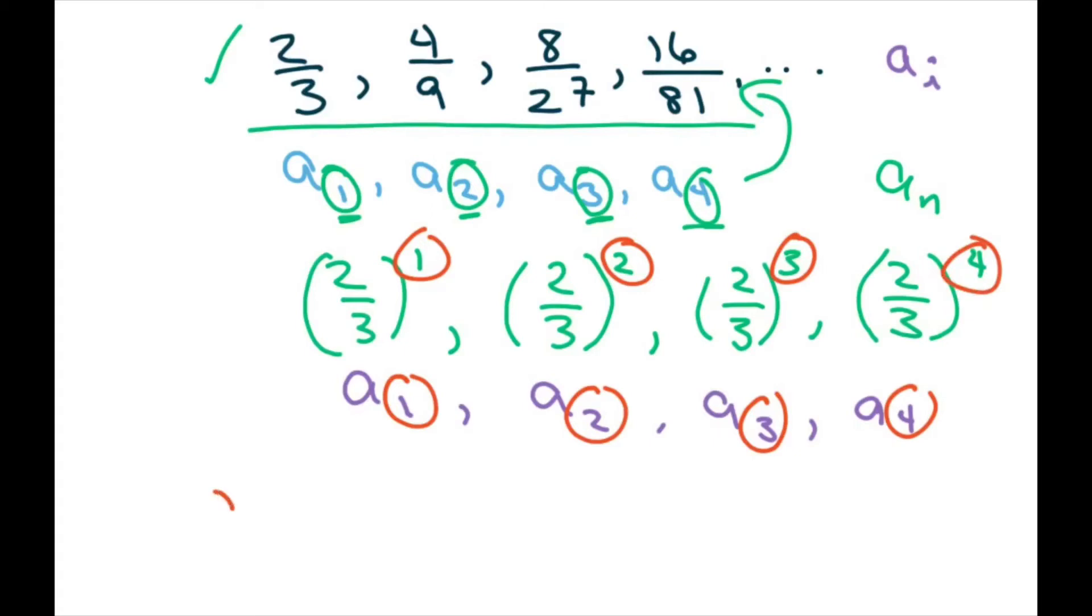So now I can just write this as a sub n equals two thirds to the nth power, since they match exactly and they're not one less or one greater.